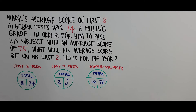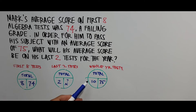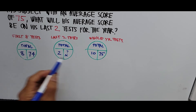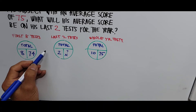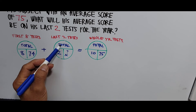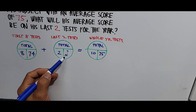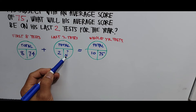To find x — the average on the last two tests — we need to find the total for the last two tests. It's clear that the total for the first eight tests plus the total for the last two tests equals the total for the whole year. So these three average pies relate this way: total of first eight plus total of last two equals total for the year.